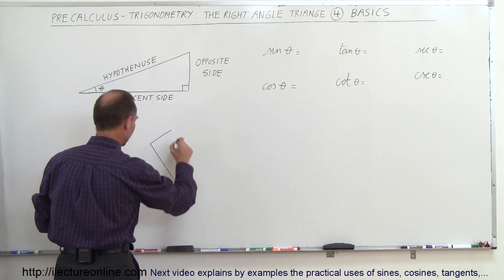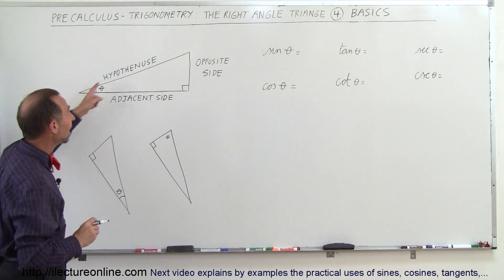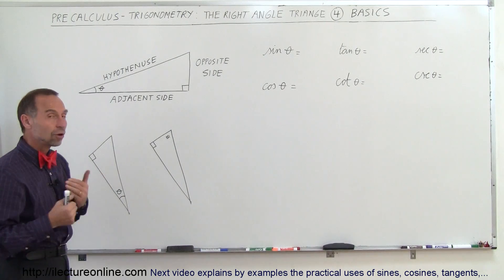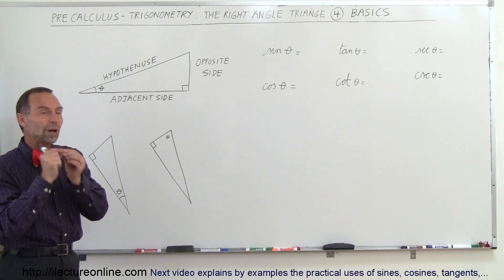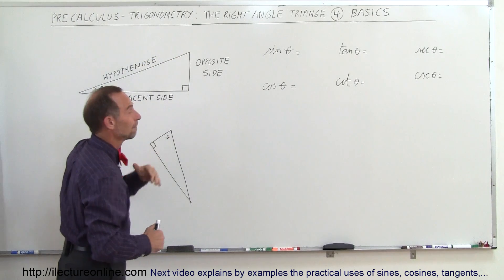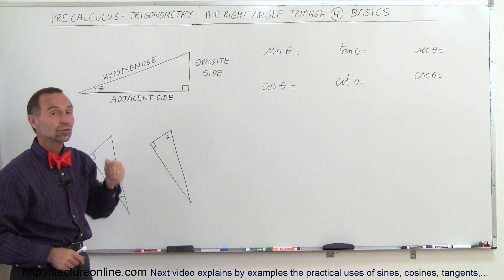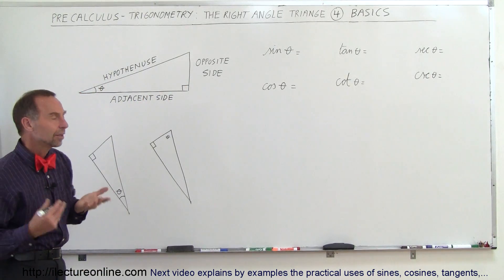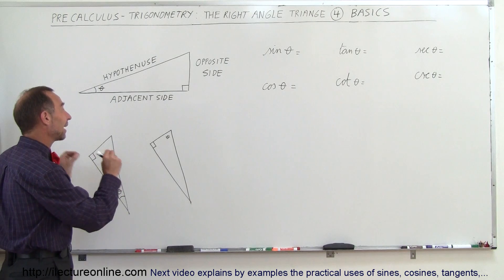Let's take the same triangle with the right angle and call one angle theta. We have three sides: one side is considered the hypotenuse, which is the longest of the three sides. The other two sides are called the opposite side and the adjacent side. Every triangle has a hypotenuse, an opposite side, and an adjacent side — all relative to the angle. The Pythagorean theorem states that the square of the hypotenuse equals the sum of the squares of the other two sides.